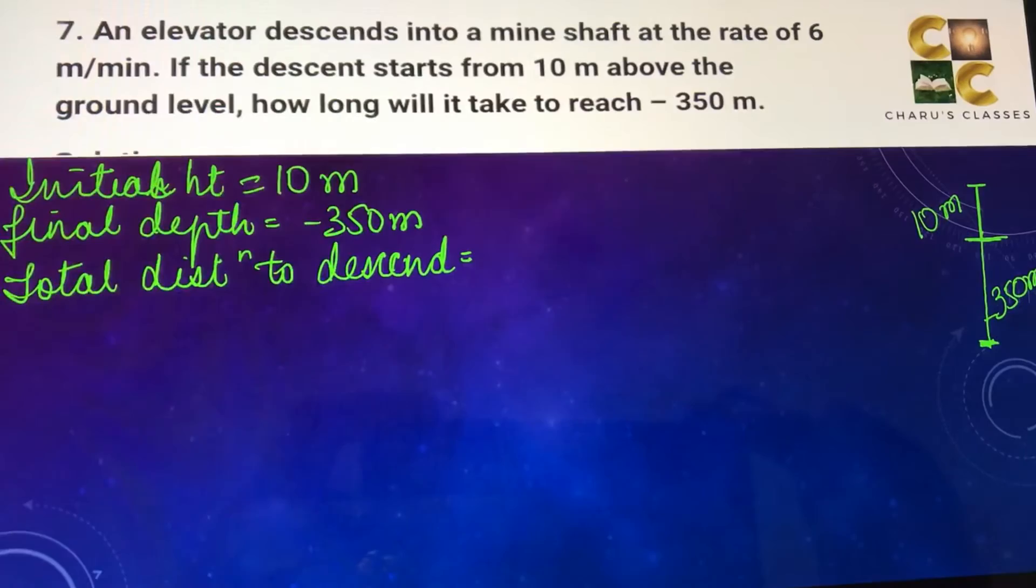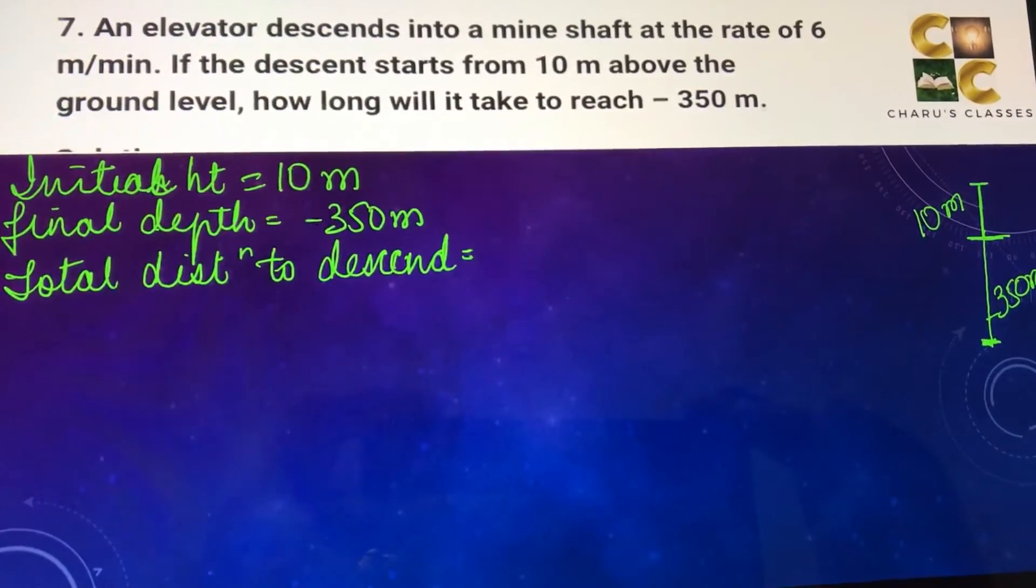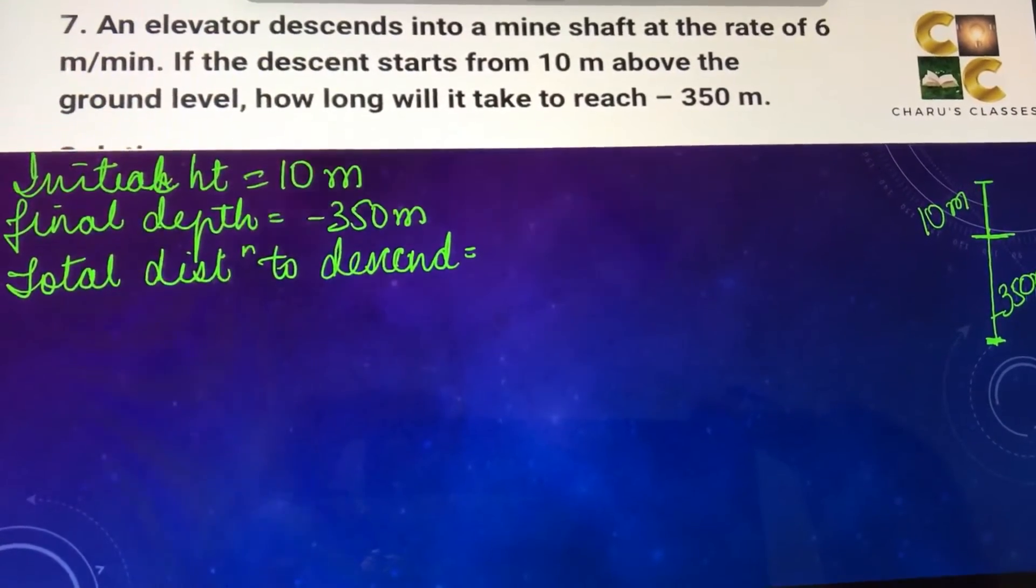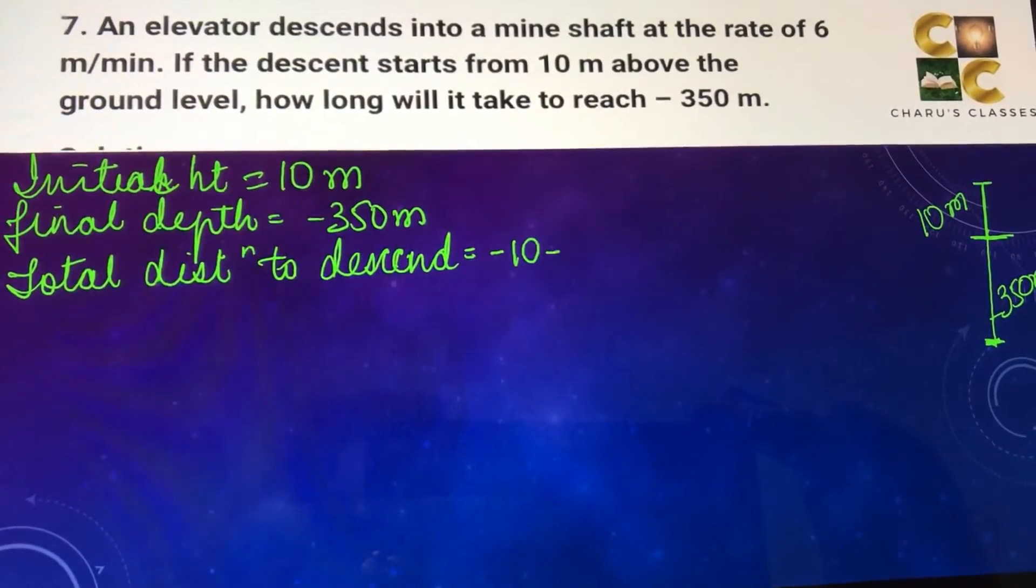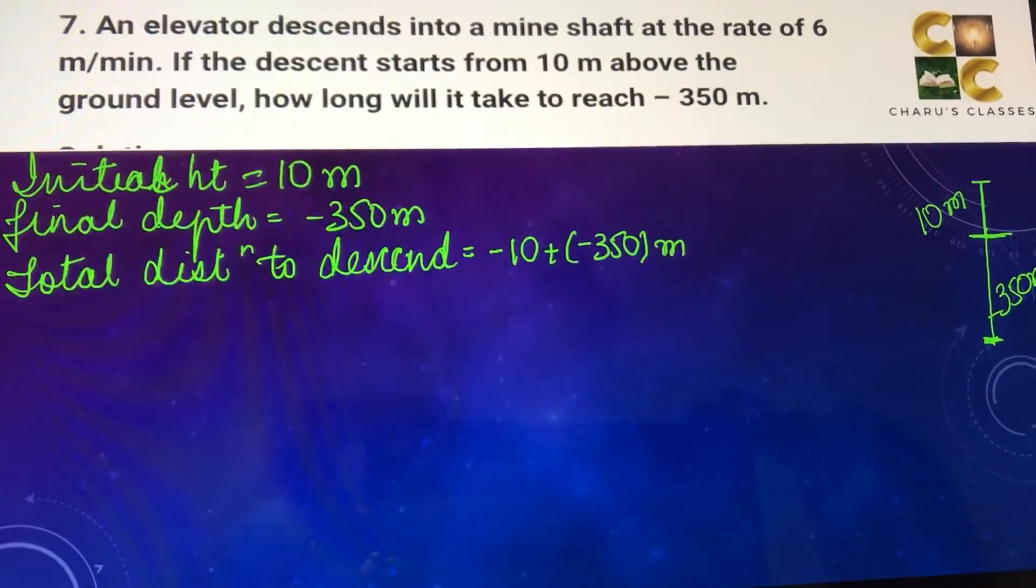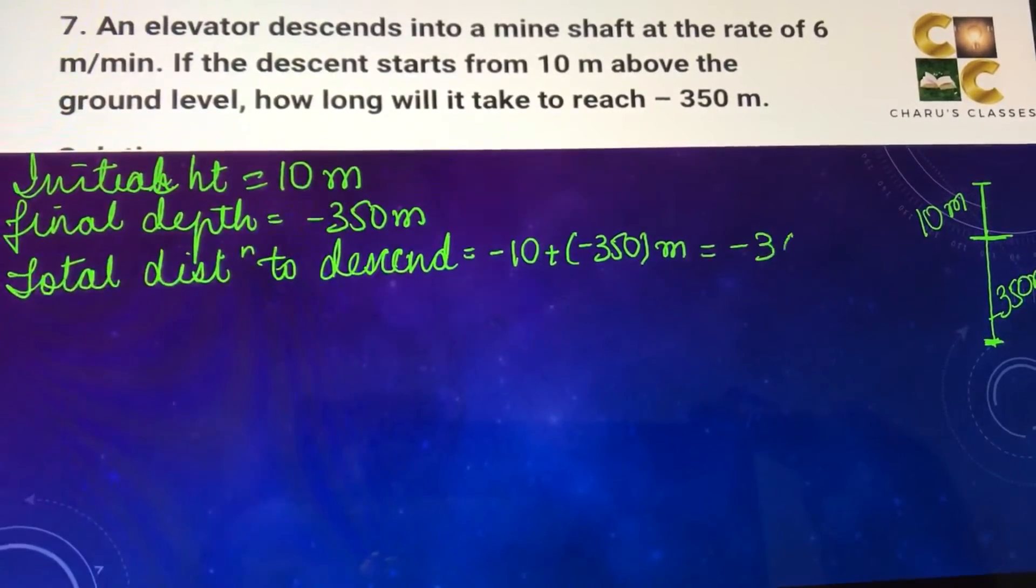Because the lift or the elevator is descending, it is going downwards, so we are going to take 10 meters also as negative. So minus 10 plus minus 350 meters, or that is equal to minus 360 meters.